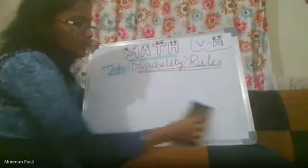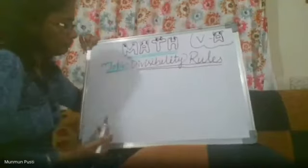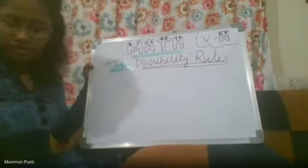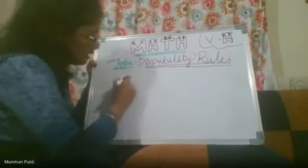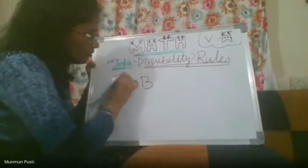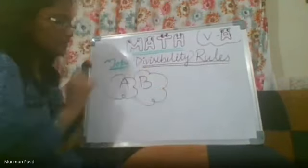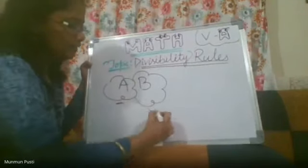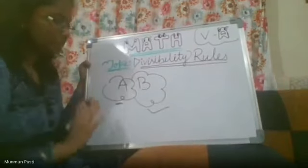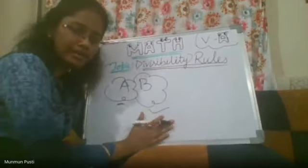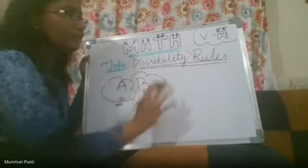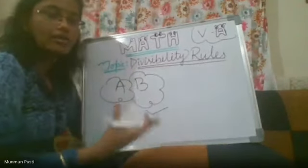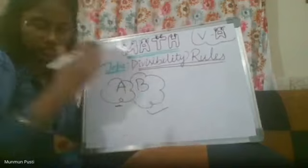Today we are going to learn divisibility rules, and in those rules we are going to use factors — that's why I gave you examples of factors. Suppose two numbers: our first number is A, and our second number is B. We can say that A is divisible by B if B is a factor of A. The divisibility rule tells us, without doing the actual division, how we can find which number is divisible by which number.